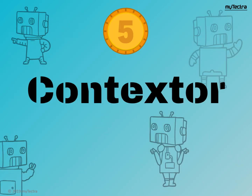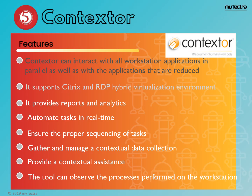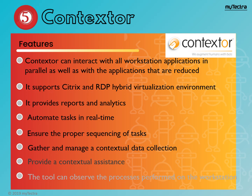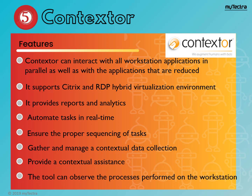Number 5 is Contextor tool. It renders on-premise and cloud services. It works on all workstation applications. It is a robotic process automation solution which offers complete client view, online help, and shares data within two or more applications. Features of this tool: it can interact with all workstation applications. It supports Citrix and RDP hybrid visualization environment. It provides reports and analytics, automates tasks in real time, ensures proper sequencing of tasks, gathers and manages contextual data collection, and provides contextual assistance. This tool can observe the process performed on the workstation.